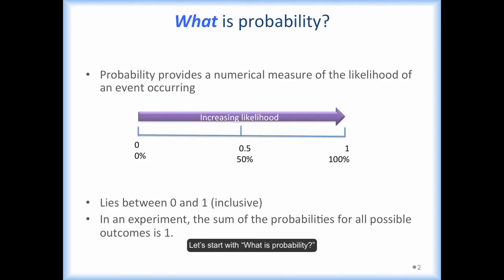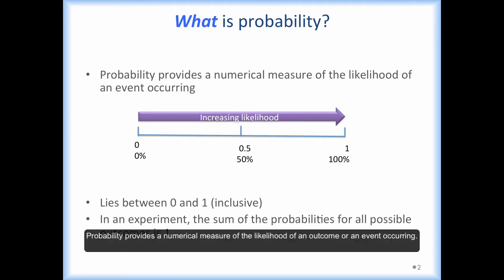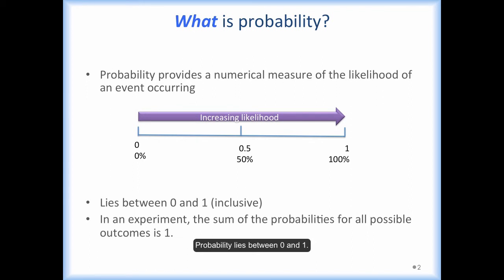So let's start with what is probability? Probability provides a numerical measure of the likelihood of an outcome or an event occurring. Probability always lies between 0 and 1. The closer an event's probability is to 1, the more likely the event will occur. The closer an event's probability is to 0, the less likely the event will occur.